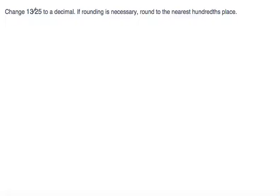Here I have a homework problem that says change 13 over 25 to a decimal. If rounding is necessary, round to the nearest hundredths place. So we have this fraction 13 over 25. We want to change it into a decimal.